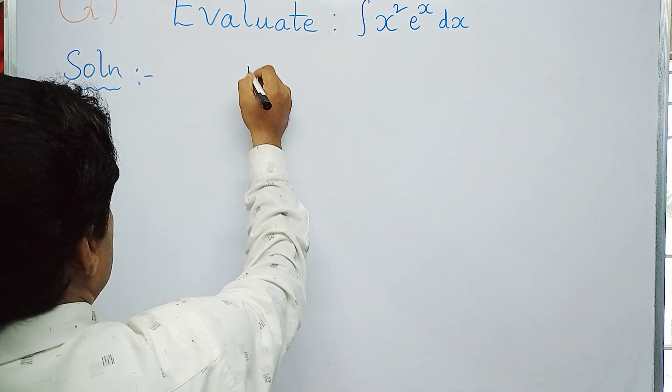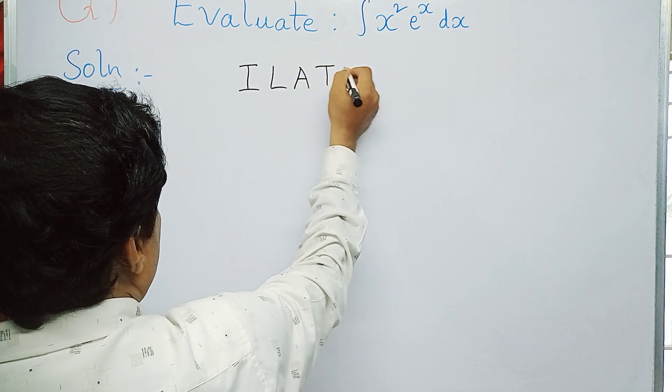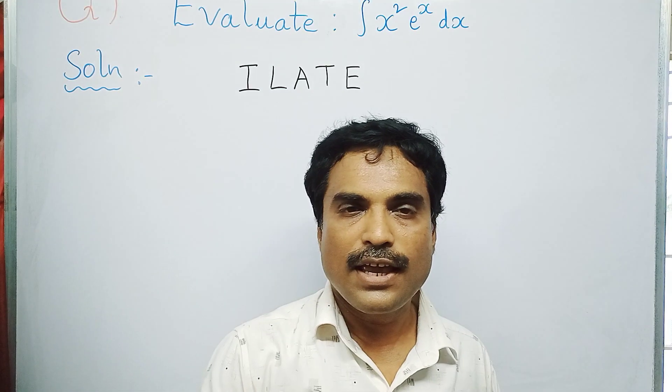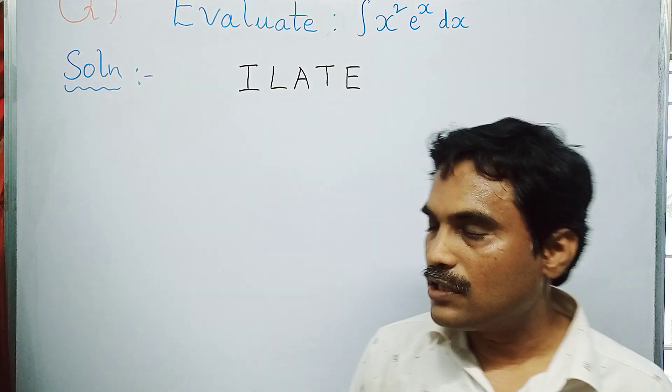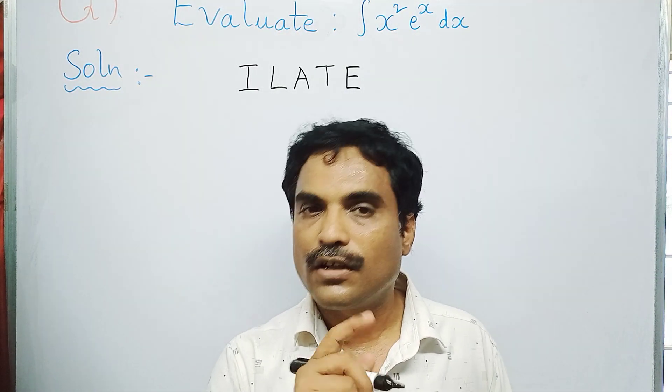First, we write the term ILATE: I stands for inverse trigonometric functions, L stands for logarithmic functions, A stands for algebraic functions, T stands for trigonometric functions, and E stands for exponential functions.